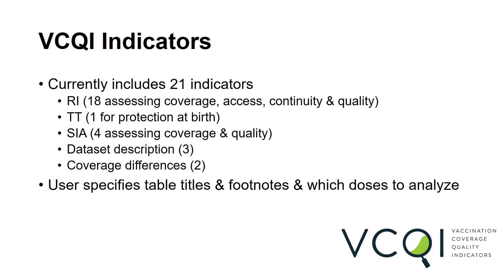At the time we're making this video, in June of 2017, VIKI includes 21 indicators: 18 for routine immunization, 1 for neonatal tetanus, and 4 for post-campaign surveys, as well as 3 for describing the survey dataset and 2 for calculating whether coverage differences are statistically significant. In a single analysis, you can select the subset of indicators that's relevant for you.